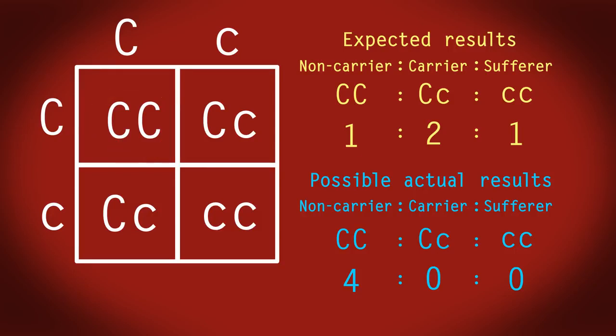Before we finish, maybe some of you have been wondering why we are allowed to just split up the parental genotype into two separate letters. This is because during meiosis, the cell division that produces sperm and egg cells, the chromosomes are separated into two halves.